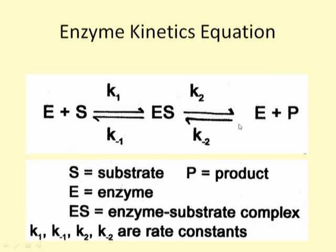The Michaelis-Menten equation derivation requires several simplifying assumptions. The first is to eliminate k-minus-2, because in vitro experiments add substrate and enzyme artificially with no product initially present, and measurements are carried out before significant product builds up. Therefore k-minus-2 can be neglected. There are basically two major ways to derive the Michaelis-Menten equation.